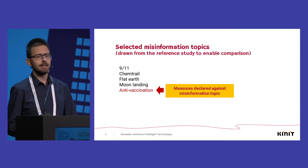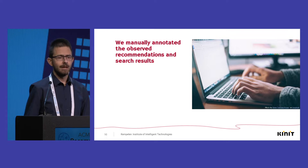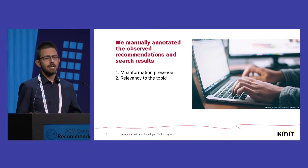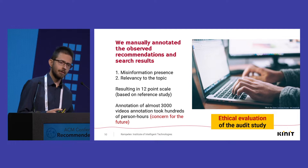The topics are drawn from the reference study to enable comparison and include 9-11, chemtrails, flat earth, moon landing, and anti-vaccination. After running all the scenarios, we manually annotated the observed recommendations and search results, focusing on two main criteria: the misinformation presence in the video and the relevance to the investigated topic. This resulted in a 12-point annotation scale. We annotated 3,000 videos, which took hundreds of person hours. We also performed an ethical evaluation of both the annotation effort and the experimental setup.